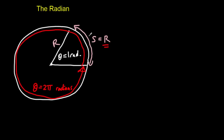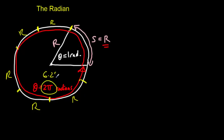It's helpful to visualize this. This arc length here is one radius, so there's one radian. There's two radians, approximately three radians, four radians, five radians, and six radians — six radians and a little bit. Well, 2π is about 6.28, so you can fit just over six radii into the circumference of a circle. Once around the circle is 6.28 radians.